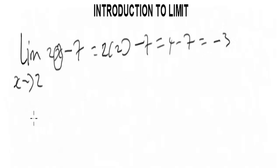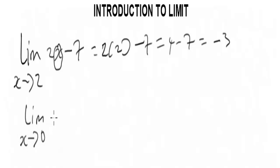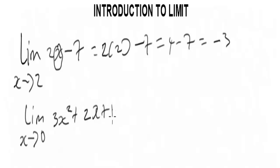Another example that involves the substitution method. Let's say you are given the limit as x tends to 0, and you have the values 3x squared plus 2x plus 1, all in brackets.